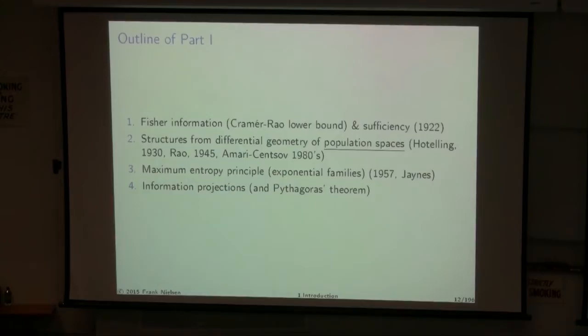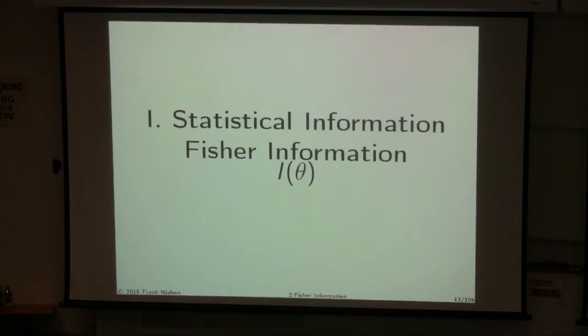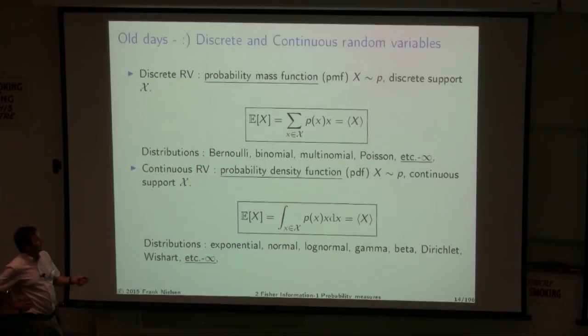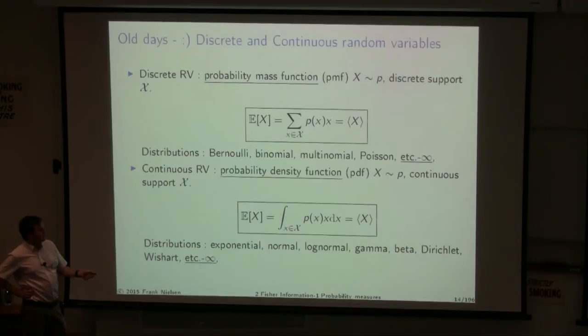The very starting point of information geometry is Fisher information — the information that an observable random variable x carries about an unknown parameter, noted I(θ). Before the precise definition, let me do a quick recall of probability theory. We distinguish between discrete distributions like Bernoulli and binomial, and continuous random variables like the exponential and normal distributions.